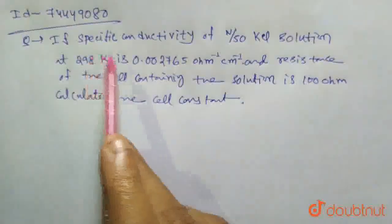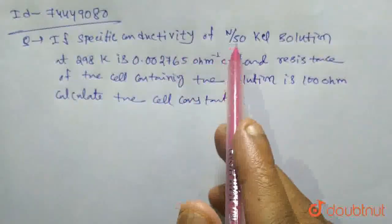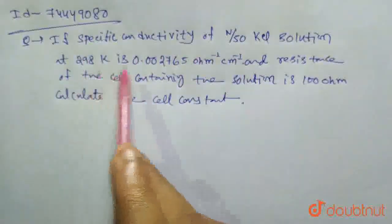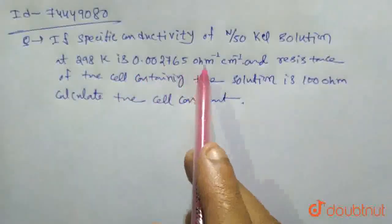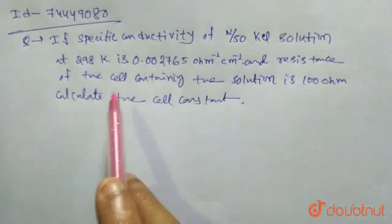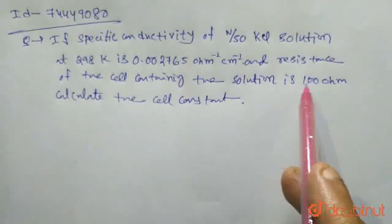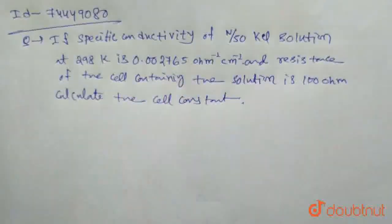The question that is given is: specific conductivity of N/50 KCl solution at 298 Kelvin is 0.002765 ohm inverse cm inverse, and resistance of the cell containing the solution is 100 ohm. Calculate the cell constant.